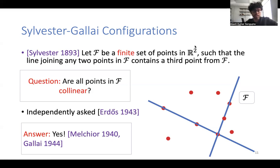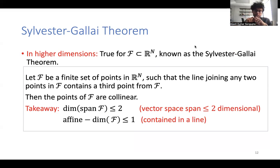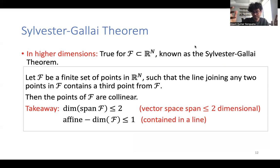In fact, even more is true in higher dimensions: inside Rn, no matter how large the dimension of the ambient space is, as long as the set of points satisfies the same condition, all of them have to be collinear. The affine dimension is at most one — they're all on a line — and the dimension of the vector space span of all our points inside Rn is at most two. That is the result known as the Sylvester-Galai theorem.